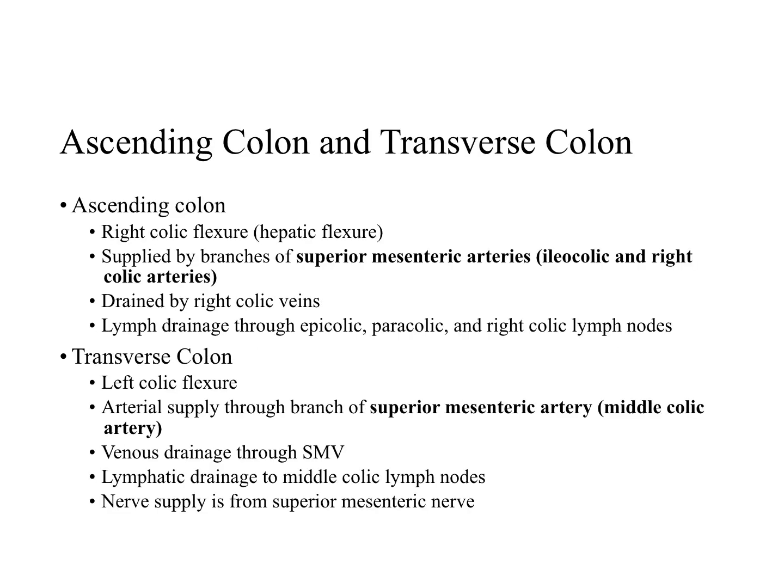The colon has four parts — the ascending, transverse, descending, and sigmoid colons — that succeed one another in an arch. The colon encircles the small intestine, with the ascending colon lying to the right, the transverse colon superior and anterior to it, the descending colon to the left, and the sigmoid colon inferior to it.